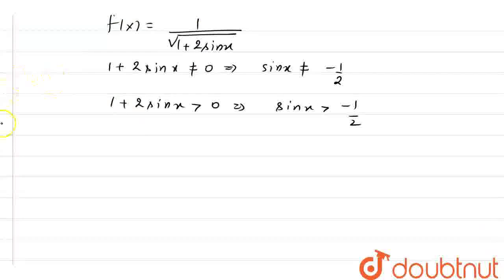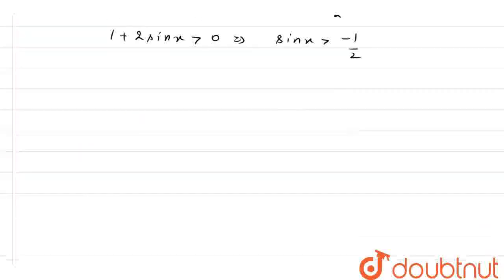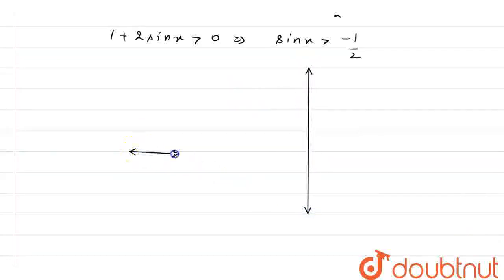So here we get sin x greater than minus 1 by 2, which is the same thing here. That's why I'm saying there is no difference between putting 'or' here. Now let's solve this. First of all, we have to make our diagram so we can get a clear understanding of it.